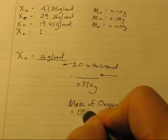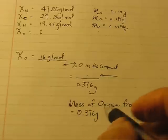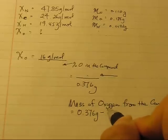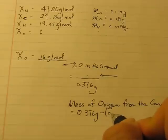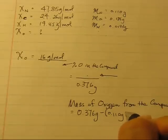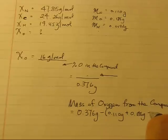So, what we can do is simply take the total mass of the compound minus the total of those three masses, so 0.110 grams, plus 0.186 grams, minus 0.0193 grams.